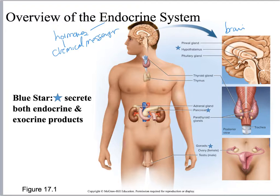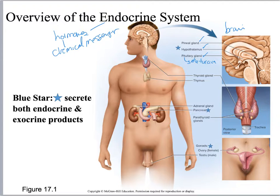In the brain we have three endocrine glands: the pineal, hypothalamus, and pituitary. You learned these in A&P 1. Remember the pituitary is sitting in the sella turcica — if you don't remember what bone that is, go look it up. You need to know those locations and be able to identify them on a model.